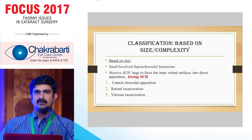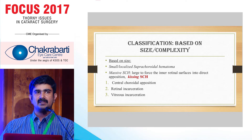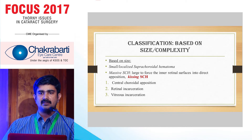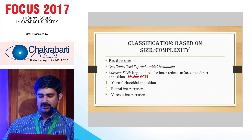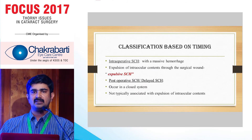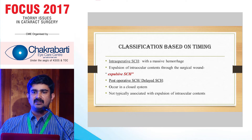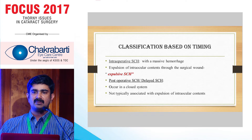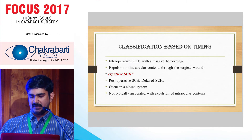It is classified based on size: when it is just small, it's called a limited suprachoroidal hemorrhage; or it's called a massive suprachoroidal hemorrhage or kissing suprachoroidal hemorrhage when there is central retino-choroidal opposition or retinal or vitreous incarceration into the wound. Based on timing, it can be intra-operative — causing expulsive suprachoroidal hemorrhage — or post-operative, occurring in a closed system and not typically associated with expulsion of intraocular contents.